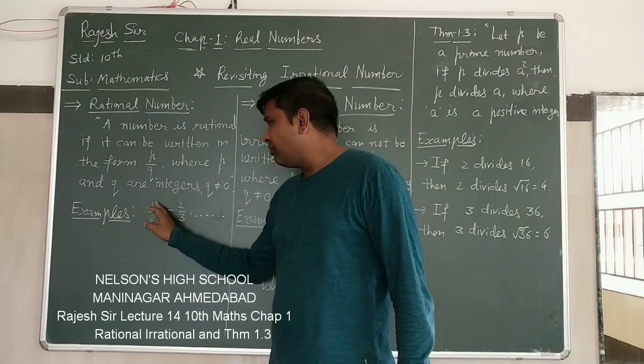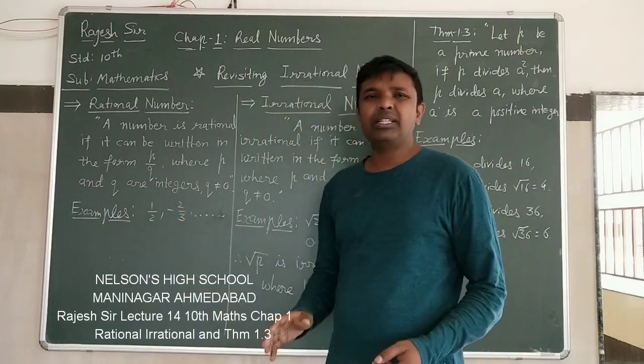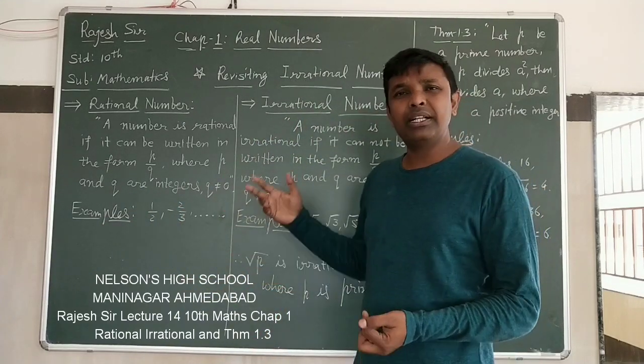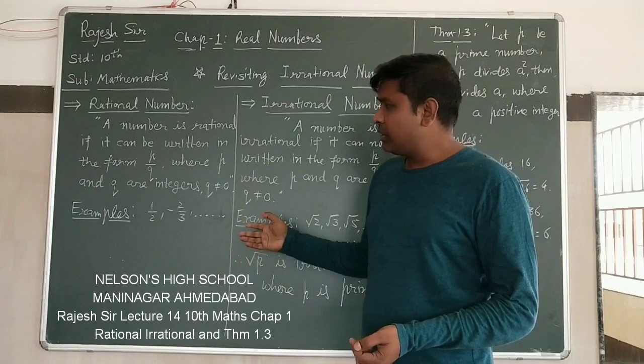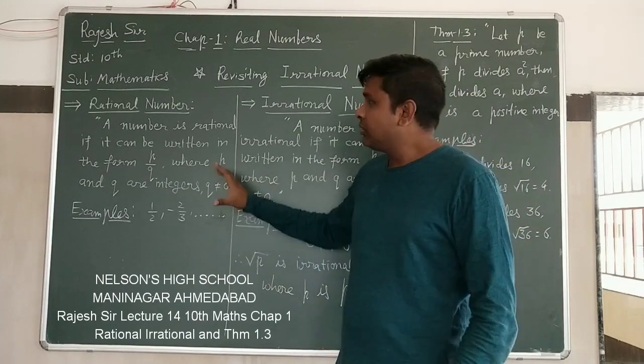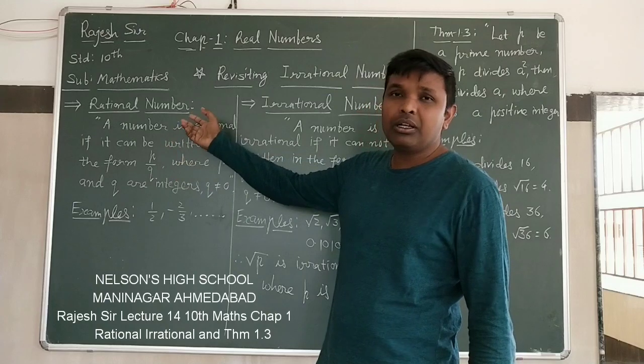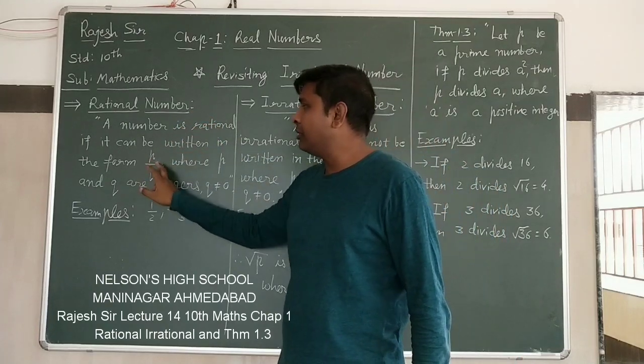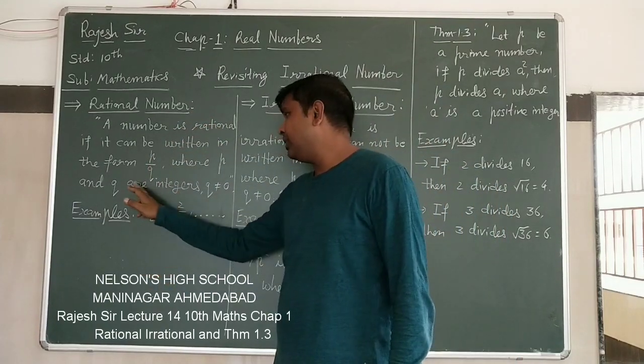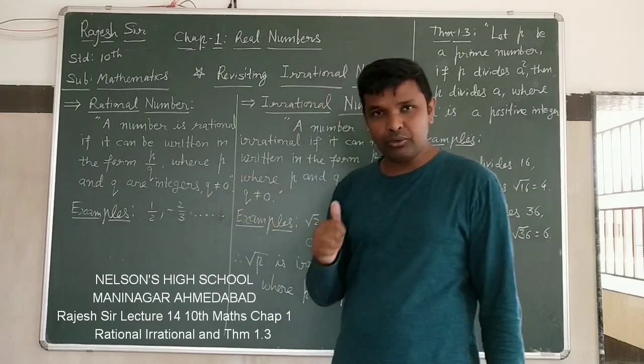Now, some examples here, 1 upon 2, minus 2 upon 3, so many examples are there, you can write it on your own. Examples not necessary to learn. What is to learn is what is called rational number, it should be in the form of P upon Q, with the conditions P and Q are integers, Q not equal to 0.